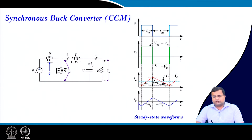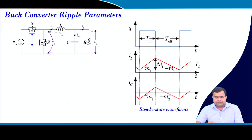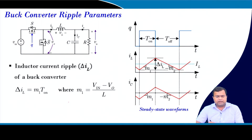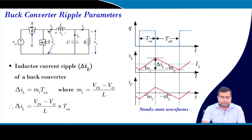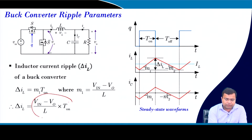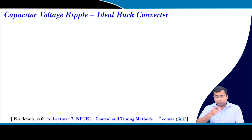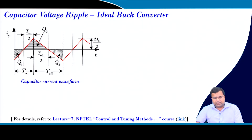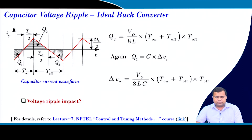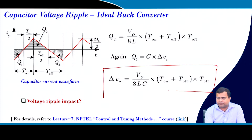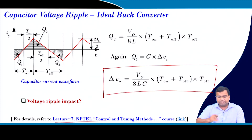If we take a buck converter in continuous conduction mode, these waveforms are well known. The inductor current ripple can be expressed in terms of input/output voltage and the on-time. For the capacitor voltage ripple, by means of charge balance we can obtain an expression in terms of on and off time, as discussed in lecture 7 of our earlier NPTEL course.